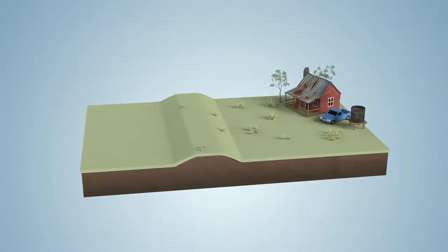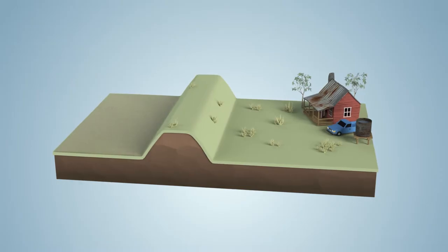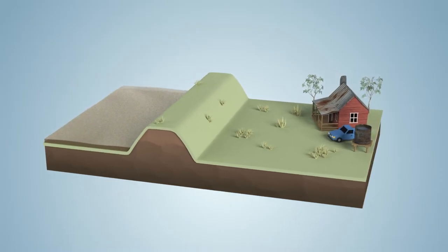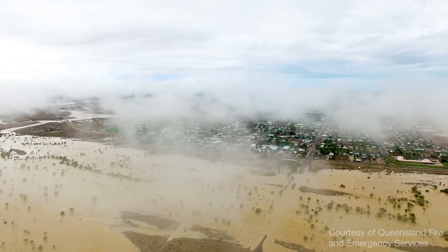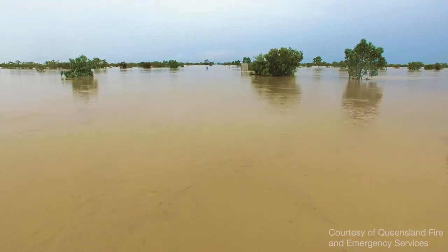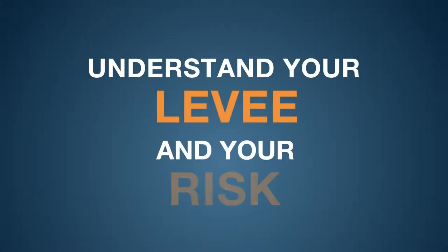A levee is a man-made structure usually made of earth or concrete that provides a barrier between flood water and a nearby town or area. No levee is flood proof and no levee can provide protection from every flood. So the best way to stay safe is to understand your levee and your risk.